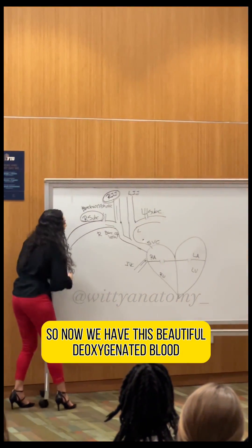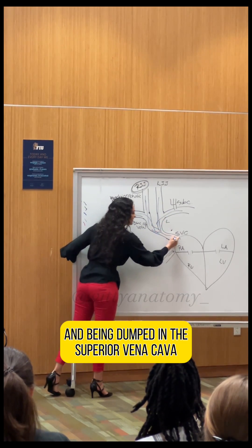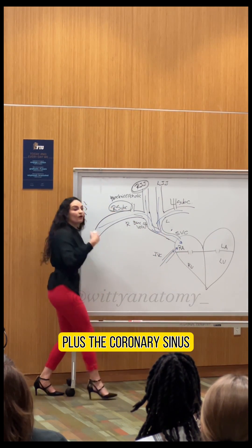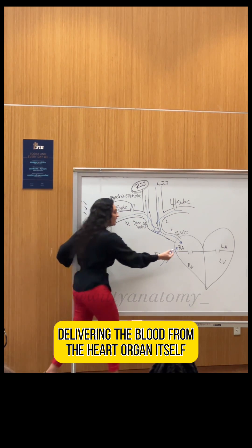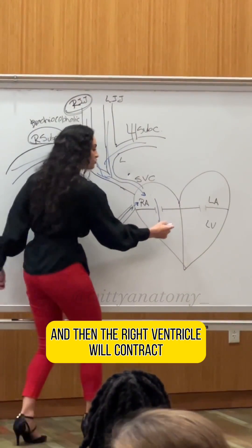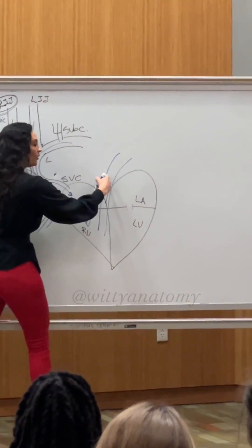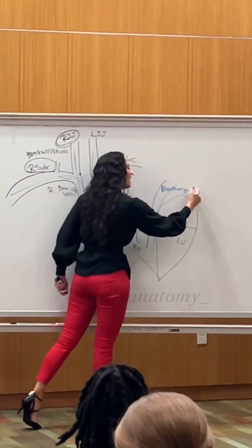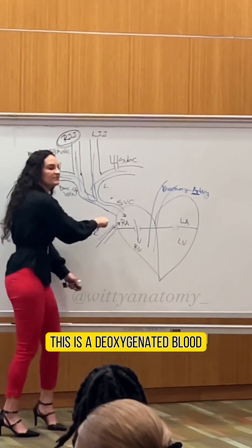We have deoxygenated blood coming from all these blood vessels and being dumped into the superior vena cava, also the inferior vena cava, delivering deoxygenated blood, plus the coronary sinus delivering blood from the heart organ itself. This blood goes from the right atrium to the right ventricle, and then the right ventricle contracts and pushes this blood out into the pulmonary artery. This is deoxygenated blood.